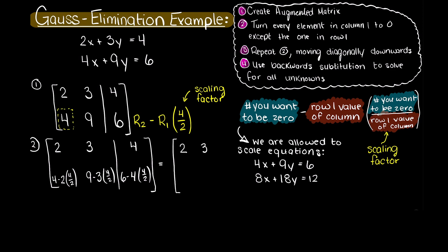This results in the following augmented matrix, which is now in upper triangular form. Therefore, we are now ready to begin solving for our unknown variables.